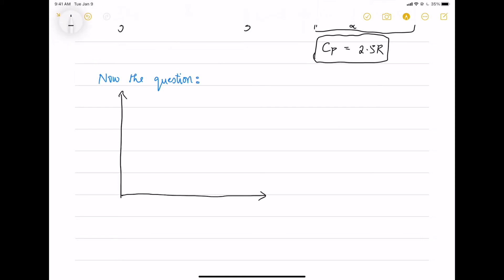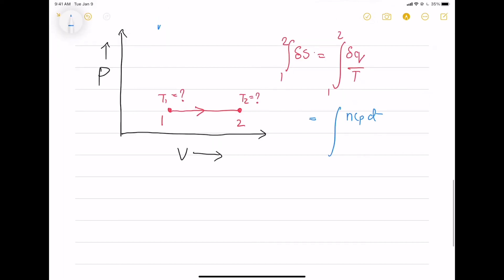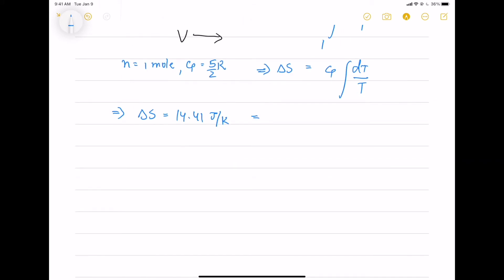Now, in this question we are given a process where it undergoes expansion and we need to find the initial and final temperature. We are given the entropy change for this reversible expansion. We know that Q equals to N Cp delta T, N is 1 mol and Cp is 2.5 R. We will integrate this and we are given the entropy is 14.41 Joule per Kelvin and integration of 1 by T is ln T.